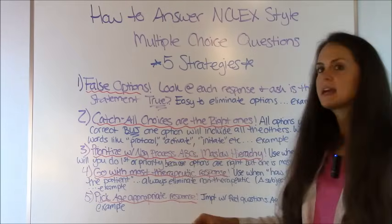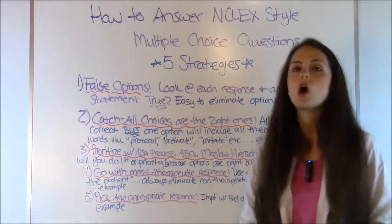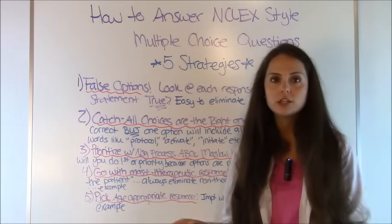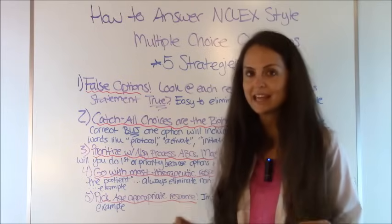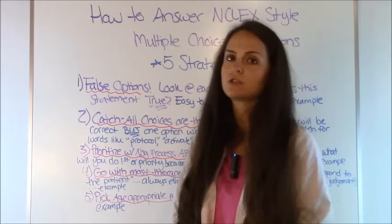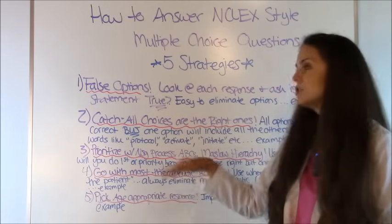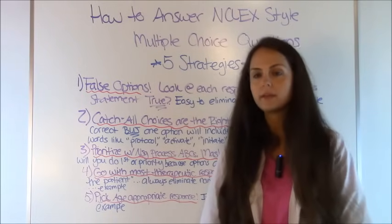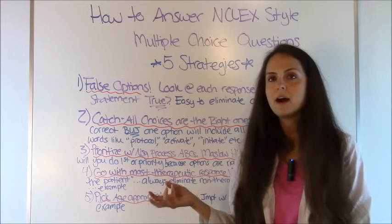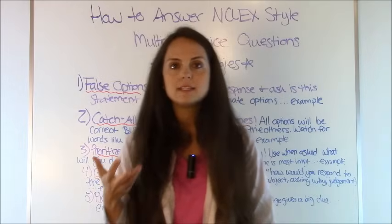Number three: prioritize with the nursing process, ABCs, or Maslow's hierarchy. This is really important because NCLEX questions love to ask what is the most important thing for you to do as a nurse — what is the priority — and all the options will be something you would actually do. Use Maslow's hierarchy: physiological needs are more important than psychological needs. Eliminate options dealing with psychological needs first, then use the ABCs — airway, breathing, and circulation — or your nursing process to determine which remaining option is most important.